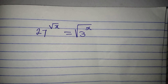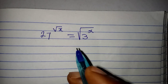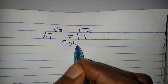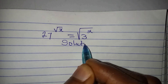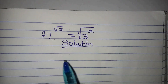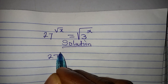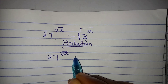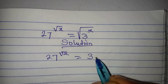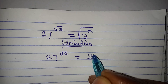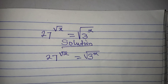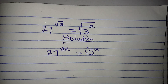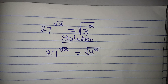Hello everyone, let's solve this problem very quickly. The equation is 27 to the power of square root of x, equals 3x times square root of 3 to the power of x.